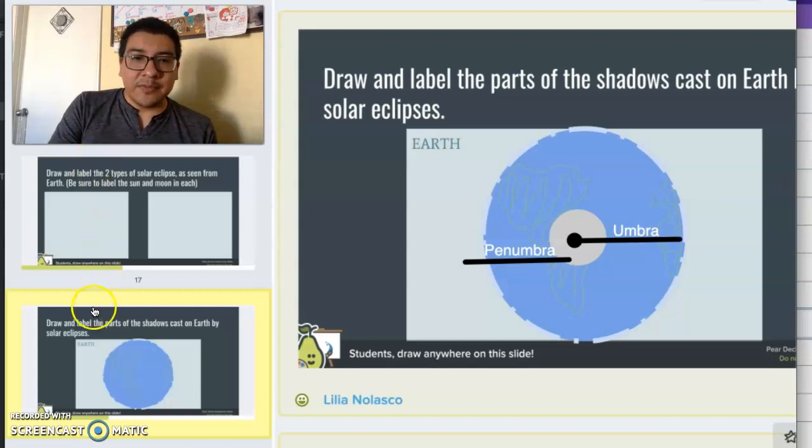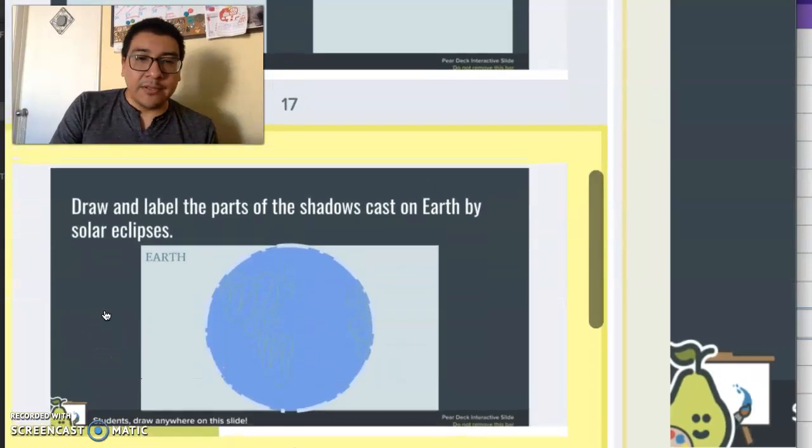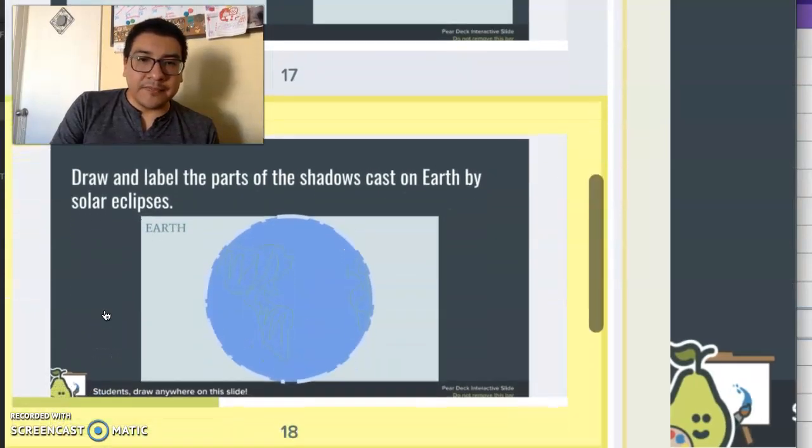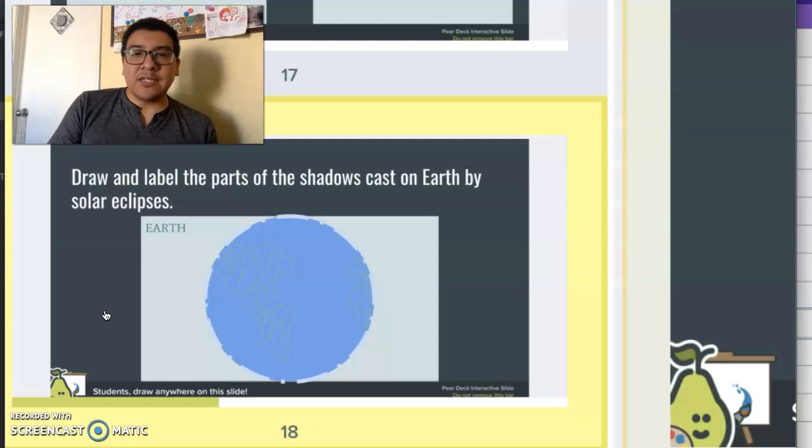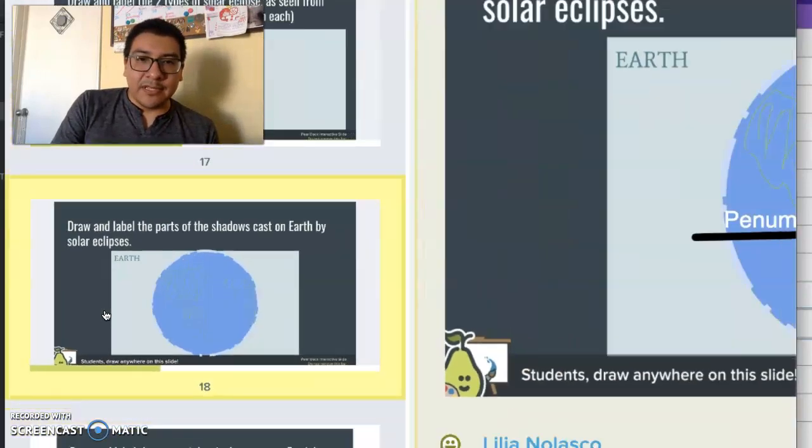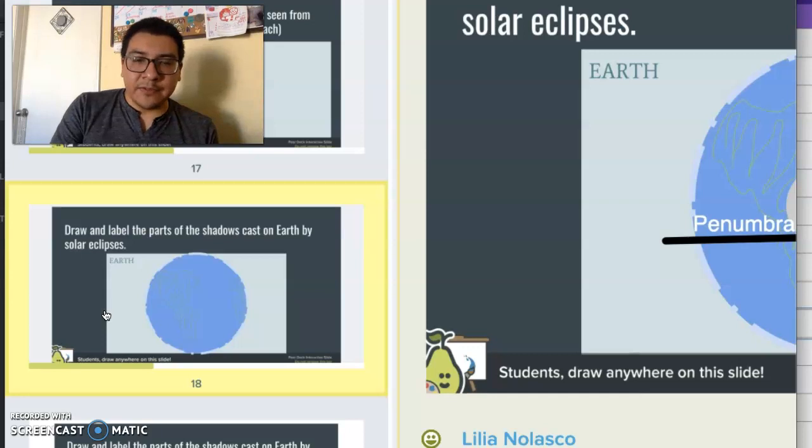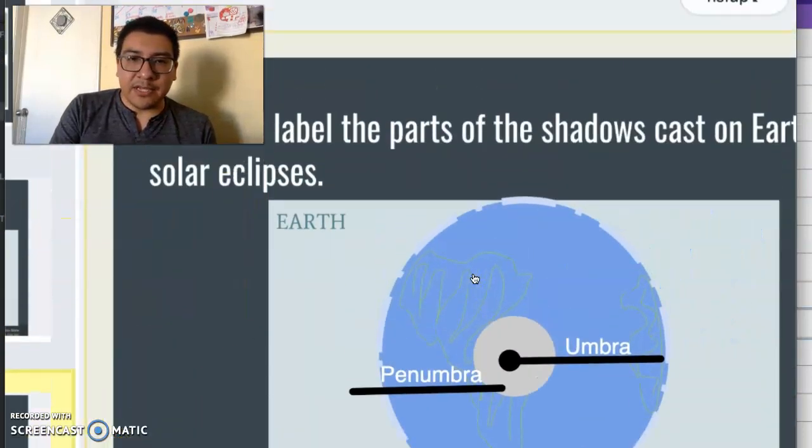For this next part, I wanted you guys to draw and label the parts of the shadows that are cast on Earth by the solar eclipses. If this were in the class, I'd give them a few minutes to do that.